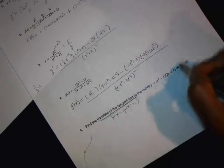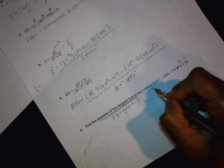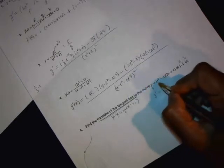So, m is what we need. This is your x1, this is your y1. We have those. To get m, we need y prime and for this, we need to use product rule.